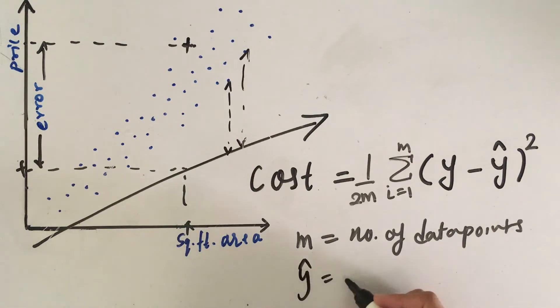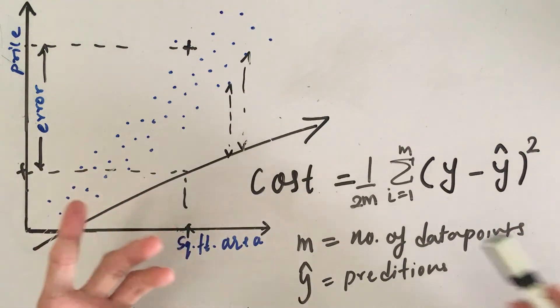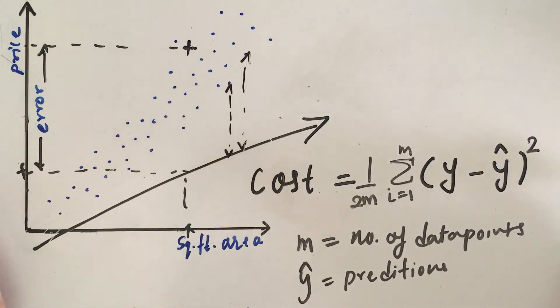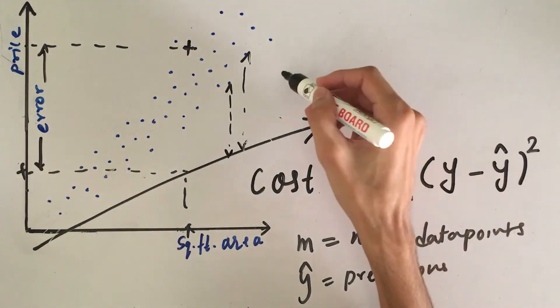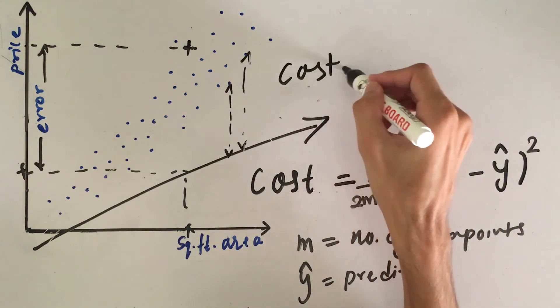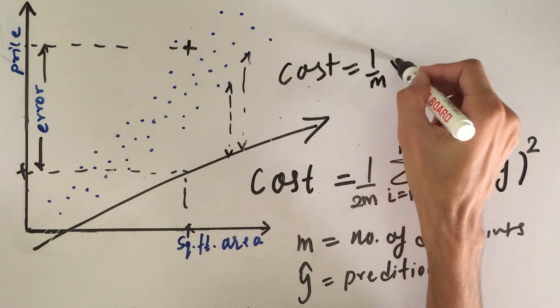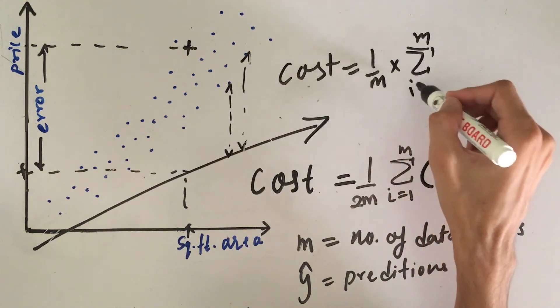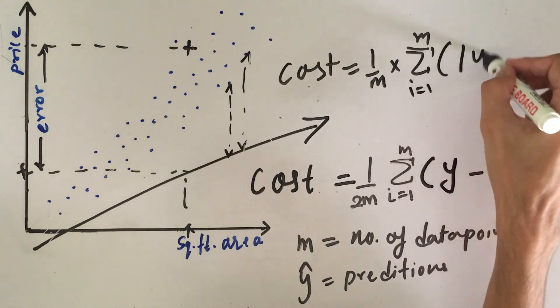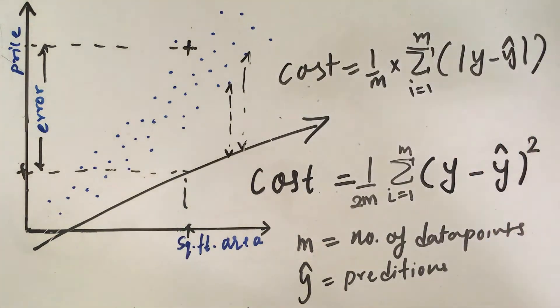Also, y hat here are predictions and y is the actual value. Now, this is the formula for the cost function of linear regression. But you can also write the cost function with a slightly different formula, which can be cost equals 1 by m multiplied by summation of all the data points, absolute value of y minus y hat. We are not squaring here because we are using absolute. Both of them are correct.